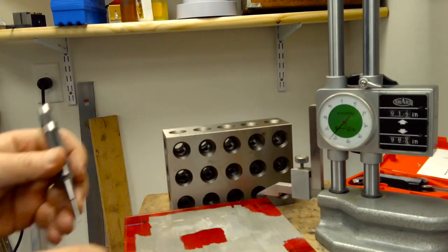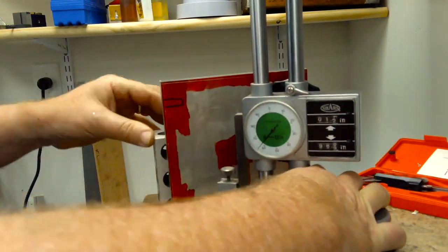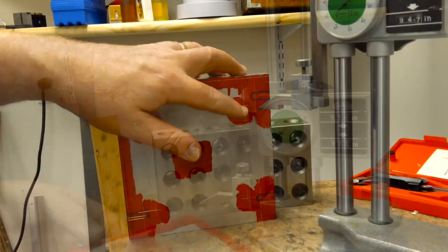So this is just a bunch of manual layout. Obviously, if the CNC existed and was working, we could just pop this on the CNC.